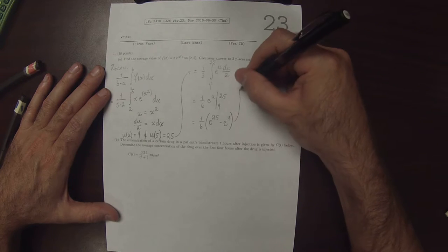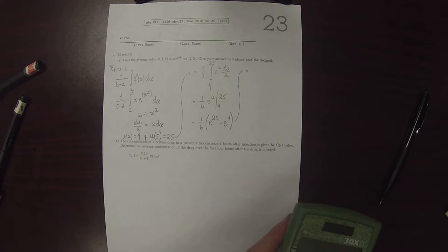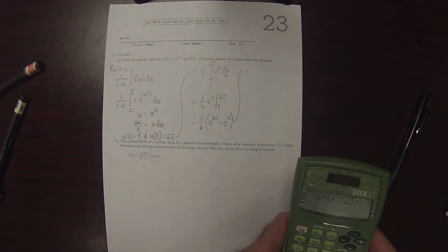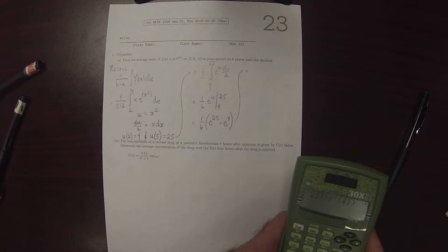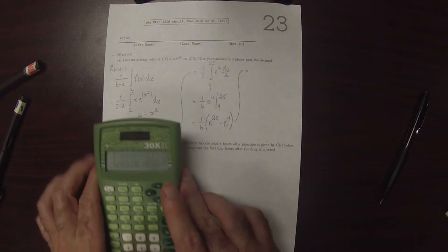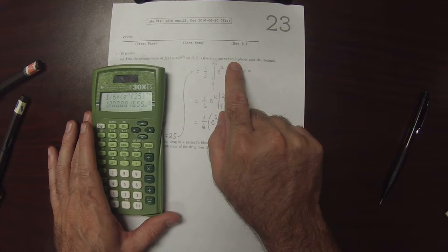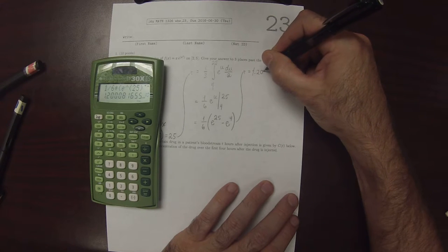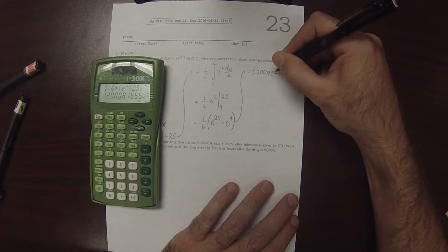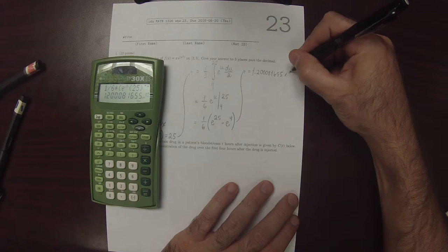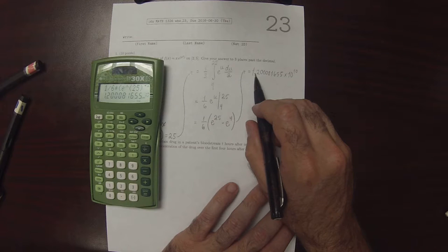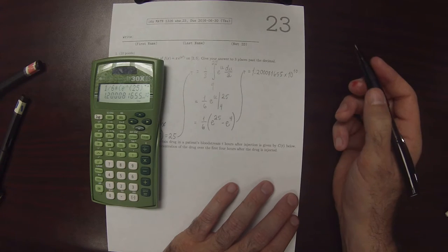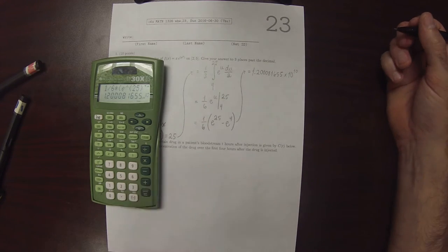And then plugging that into the machine, 1 over 6 times exponential 25 minus exponential 4. So the instructions say give your answer to 3 places past the decimal. So my calculator is reporting that this is 1.200081655 times 10 to the 10, which means we need to move this decimal place 10 places to the right. And that's impossible to do on this particular exercise.